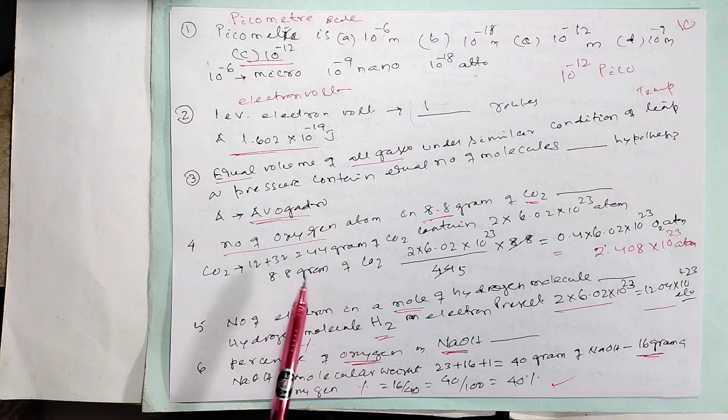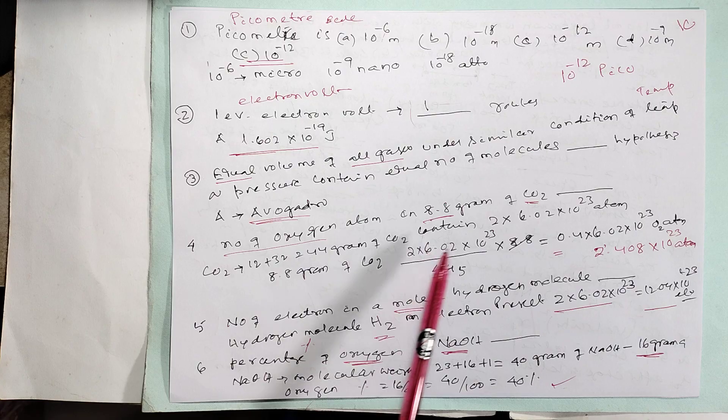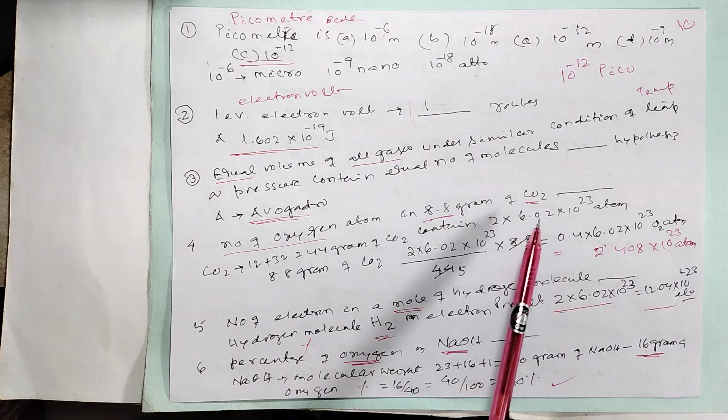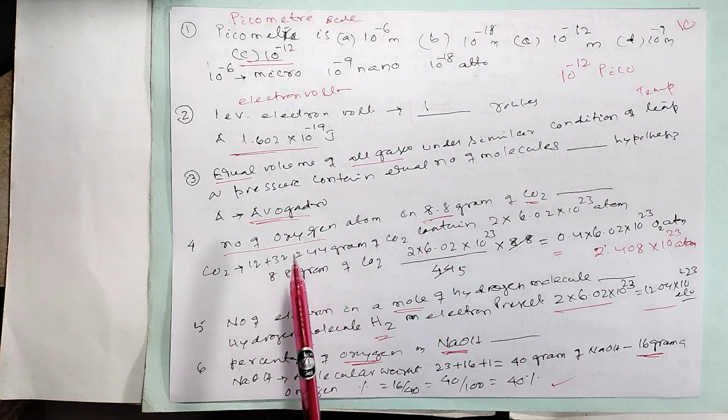What is the carbon dioxide weight? 12 plus 32 is 44 grams. 44 grams contains 2 oxygen atoms. So for 8.8 grams, using Avogadro's number, we calculate the oxygen content.